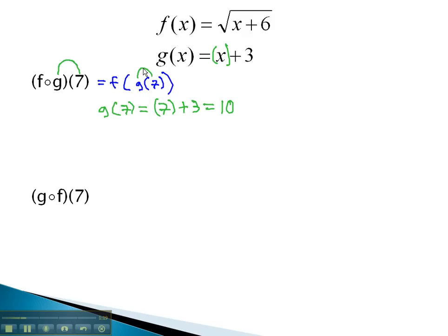Then, what this wants us to do is plug the result into the f function. In other words, we plug into the f function the answer we came up with, 10. Replacing the x with 10 gives us the square root of 10 plus 6, or the square root of 16, which is 4. Our final answer for the composition f∘g(7) is 4.